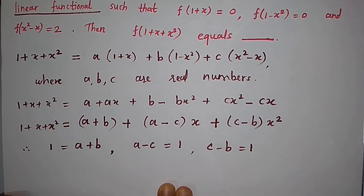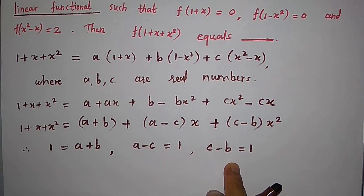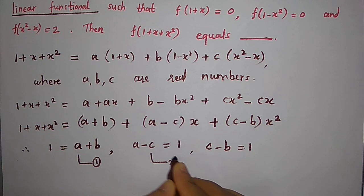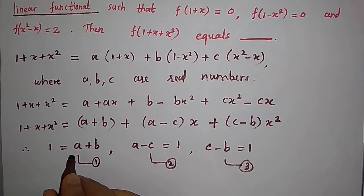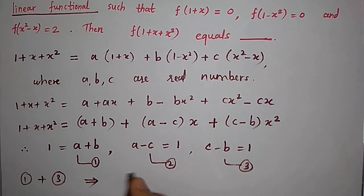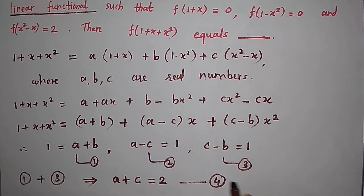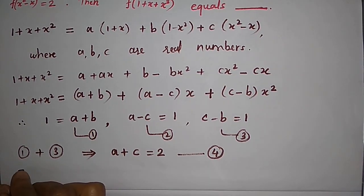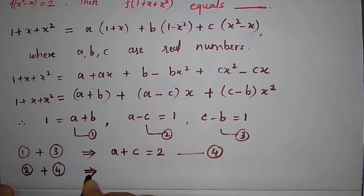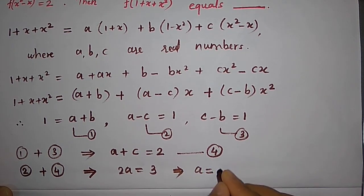We have three equations in three unknowns a, b, c, so there is a unique solution. Calling the equations (1), (2), (3): adding equations (1) and (3) gives a+c = 2, which we call equation (4). Adding equations (2) and (4) gives 2a = 3, so a = 3/2.